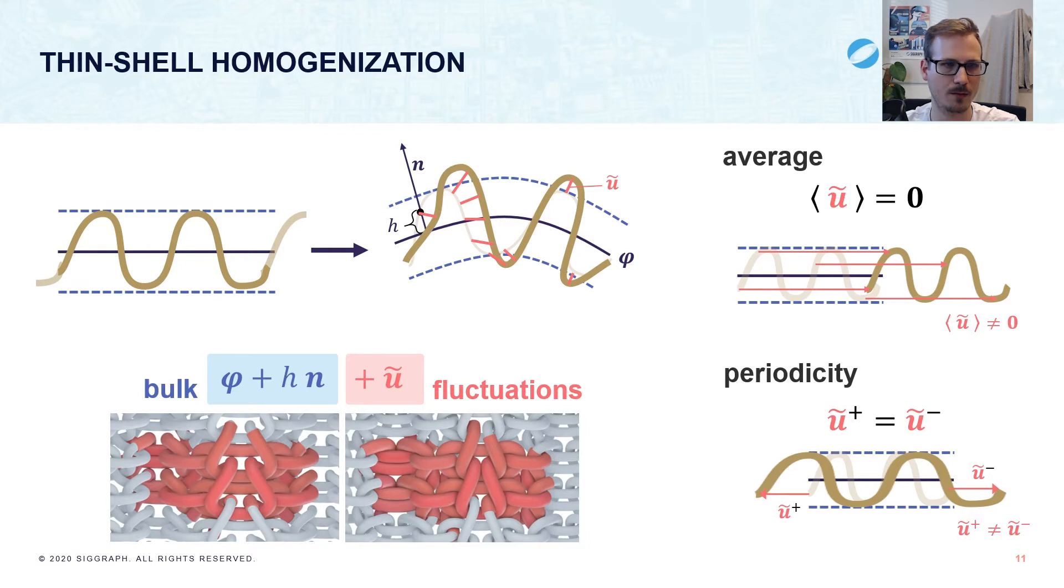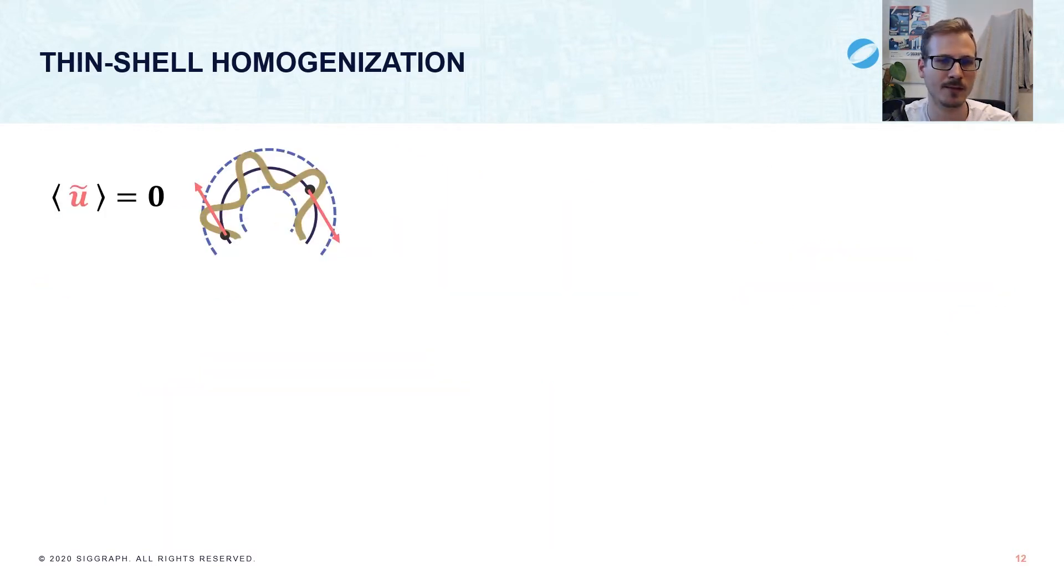But things are slightly more complicated because we have curved surfaces, where simple averaging does not work well. Consider this example of a curved surface with fluctuations indicated by arrows. The fluctuations cancel out and are thus okay under the averaging constraint, but would allow for sliding along the surface. Similarly, a different set of fluctuations would cancel and allow the yarns to shrink.